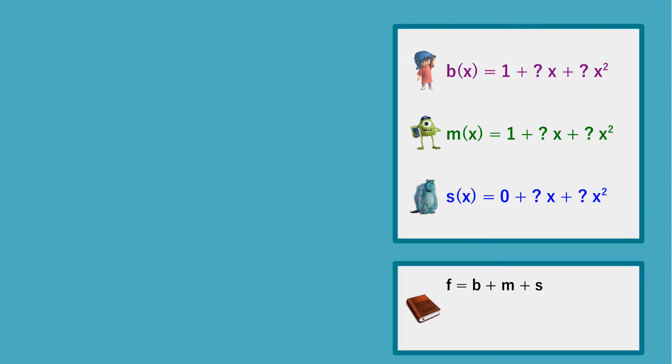What happens if we sum these three polynomials together? By the simple properties of addition, we know that it will have the shape 2 plus something times x plus something times x squared. In other words, f(0) will evaluate to the result of the vote. Furthermore, we know that the polynomial is of degree 2, meaning that we can determine that polynomial if we have 3 points, or shares, on its line.